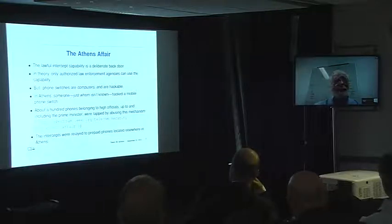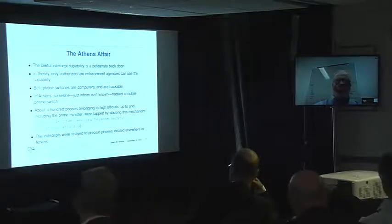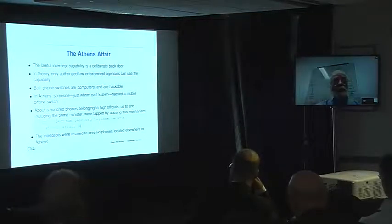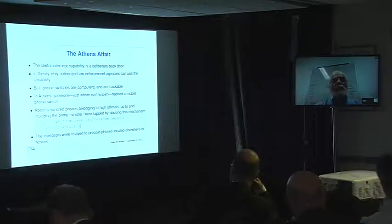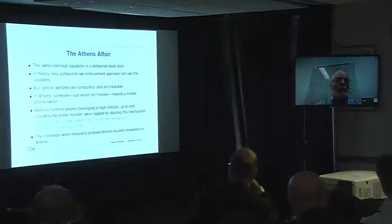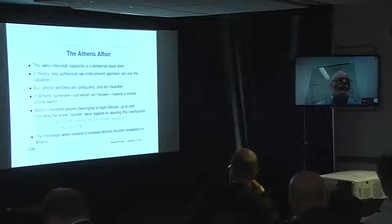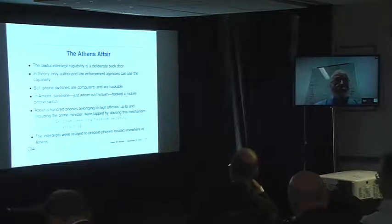Someone — whose identity is not known — hacked a mobile phone switch operated by Vodafone in Greece, took advantage of the lawful intercept capability built into the switch, and listened in on a hundred different phone numbers, up to and including the prime minister's. These phone calls were relayed to prepaid phones bought over the counter for cash, located within about a two-kilometer radius of Athens — a radius that included many embassies, including the U.S. and Russian embassies.